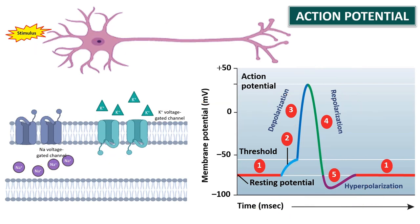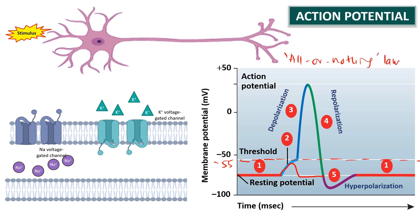The most important point to highlight is the threshold level, which is around minus 55 millivolts. This is the critical level to which the membrane potential must depolarize to initiate an action potential. If the membrane potential depolarizes but does not reach the threshold, it will not trigger an action potential and the potential returns back to resting potential — no action potential is fired. This is why we call the action potential an all-or-none law: it will only trigger once the threshold is reached; otherwise, nothing happens.